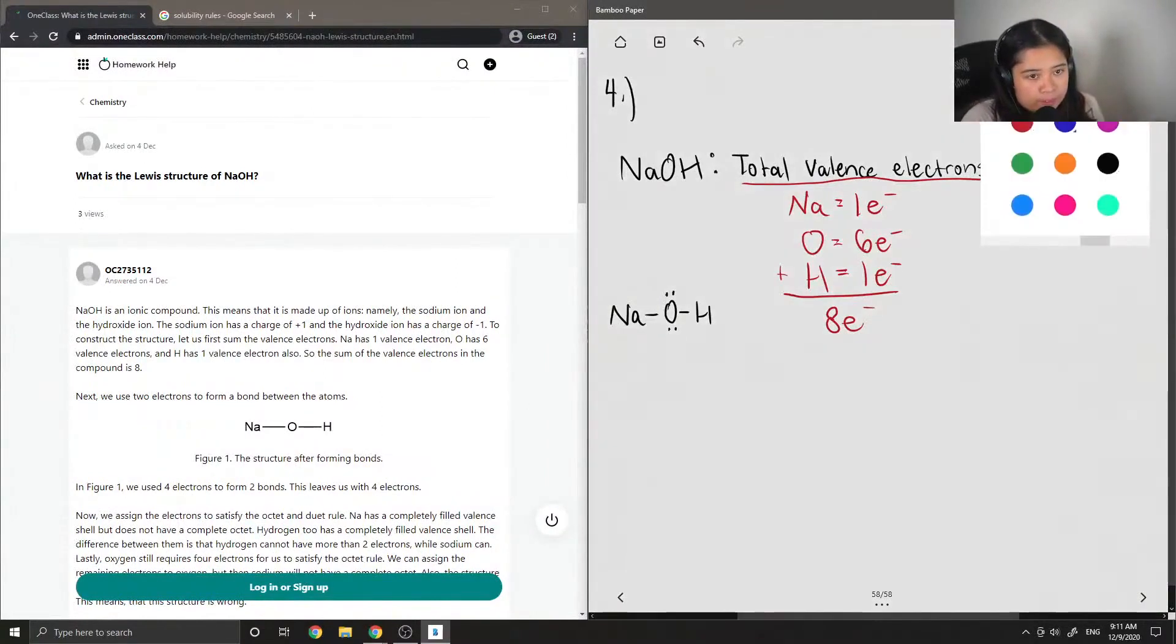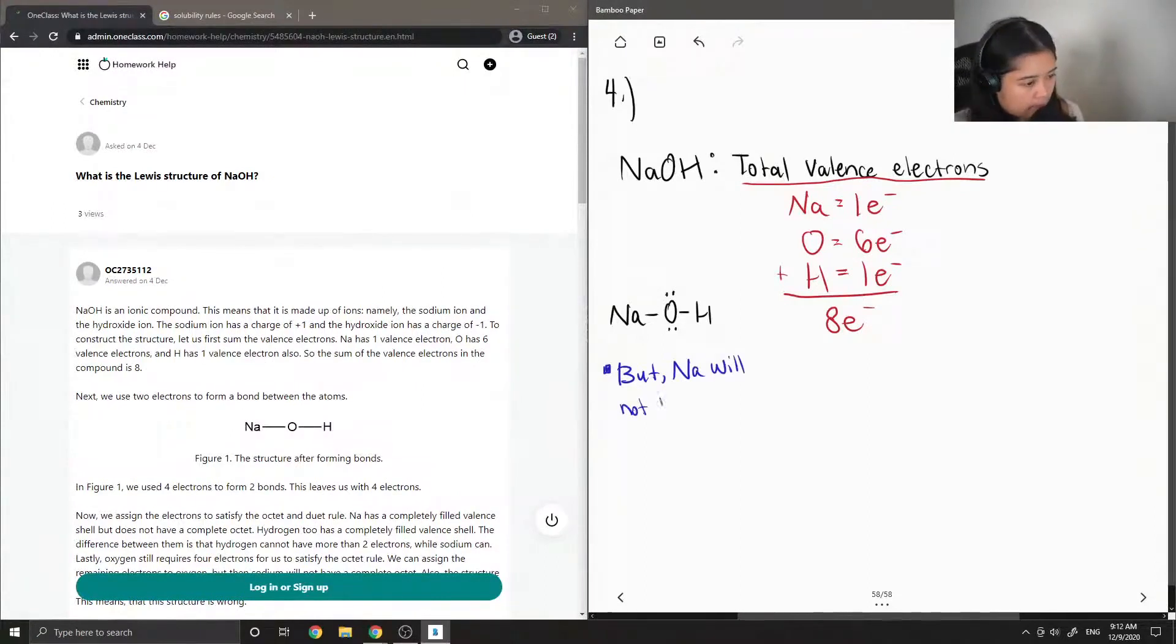But if we look at this structure, like normally you'd be done, but you can see here that sodium doesn't have a full octet. So we know we need to draw this as an ionic bond instead of a covalent bond.